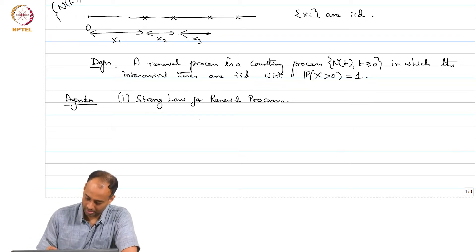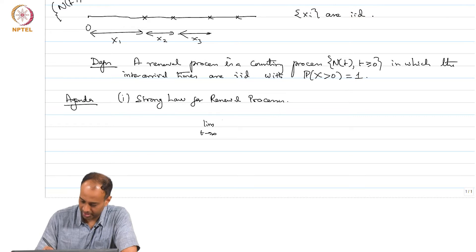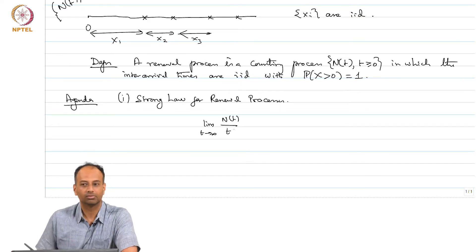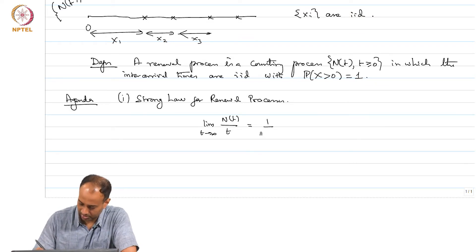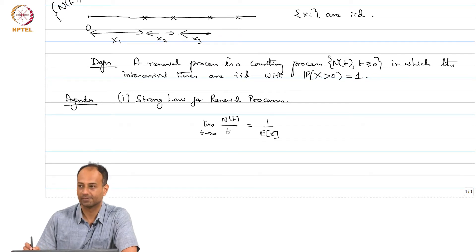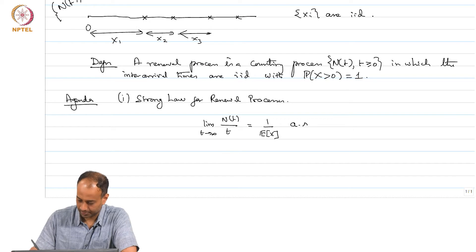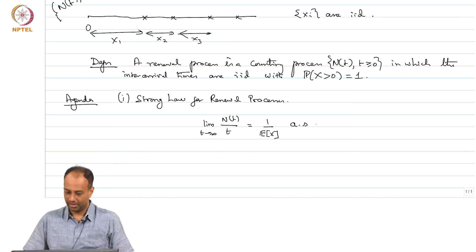And there is such a law. It basically says that if you take limit t tending to infinity NT over t, strong law for renewal process says this is equal to 1 over expectation of X almost surely.